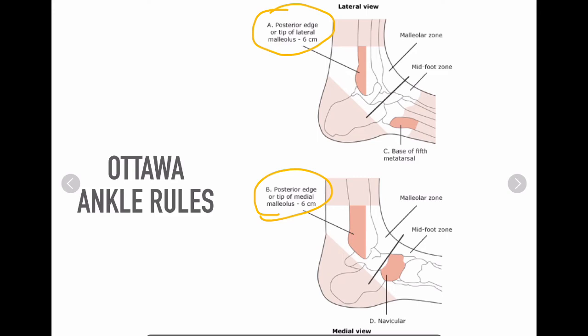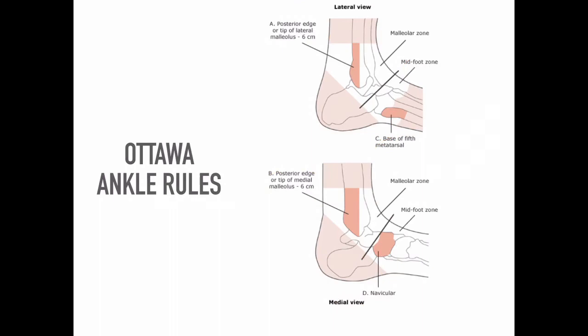Specific Ottawa criteria include bone tenderness at the posterior edge or tip of the lateral malleolus up to 6 cm. A series of foot radiograph films is required if there is pain in the midfoot zone with bone tenderness at the base of the fifth metatarsal or the navicular bone, or inability to bear weight both immediately and in the emergency department. Ottawa rules avoid unnecessary imaging, but are not applicable in diabetics and alcoholics, who have diminished sensitivity to pain.